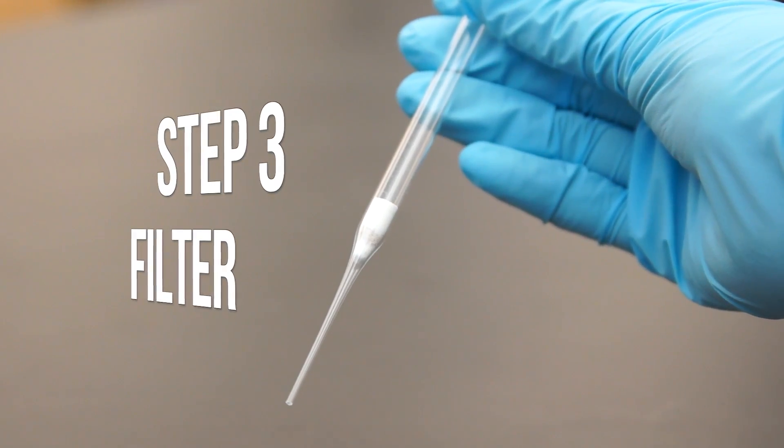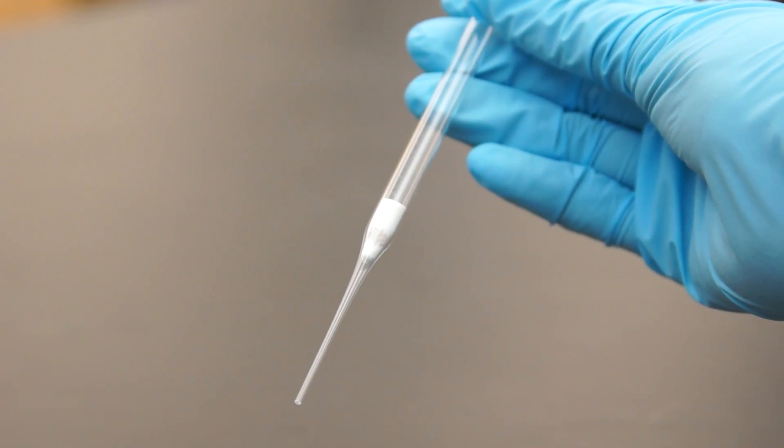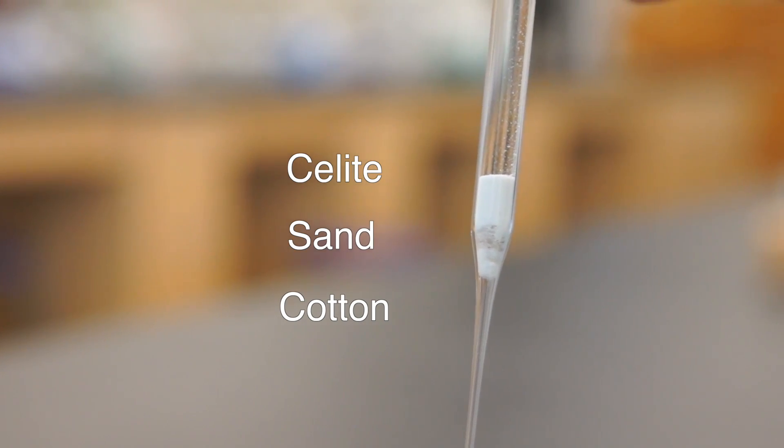The third step is to filter your sample. Do this if you have any impurities. You can use a cotton sand or celite filter as shown here.